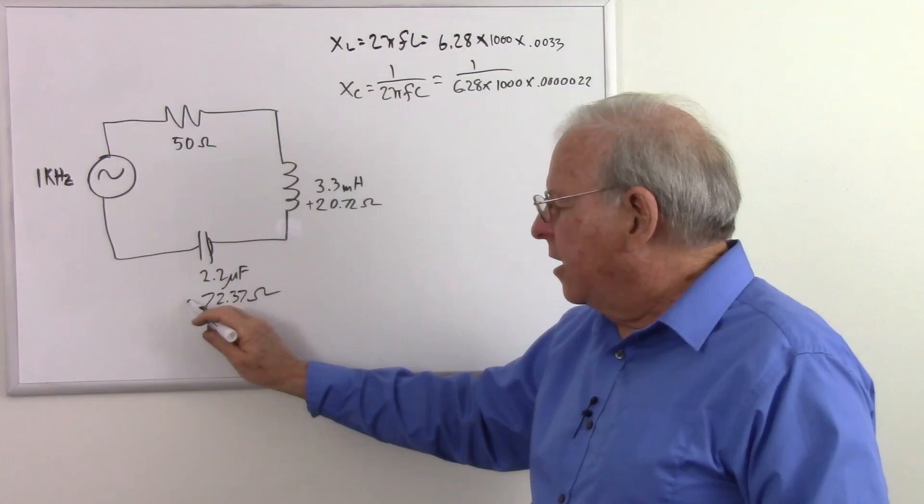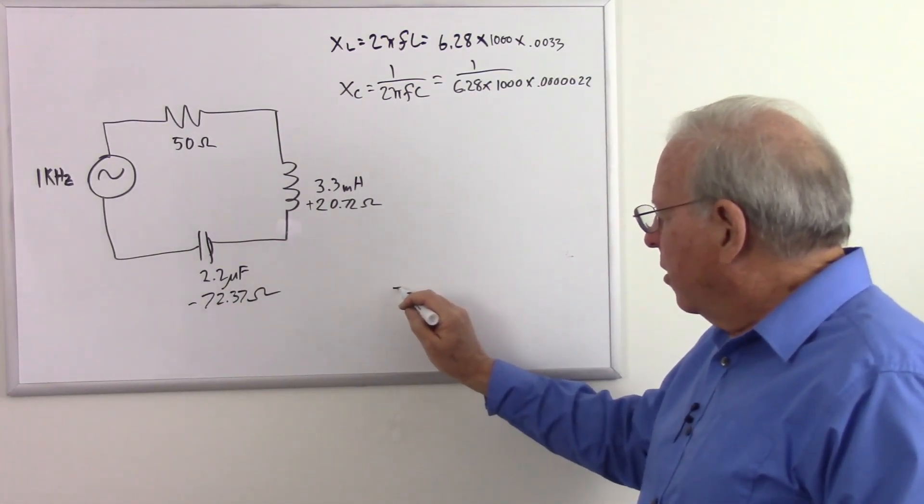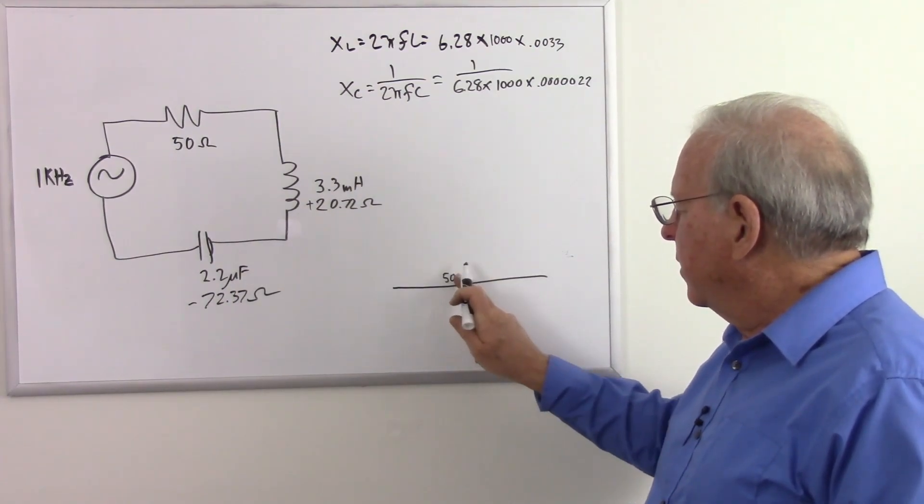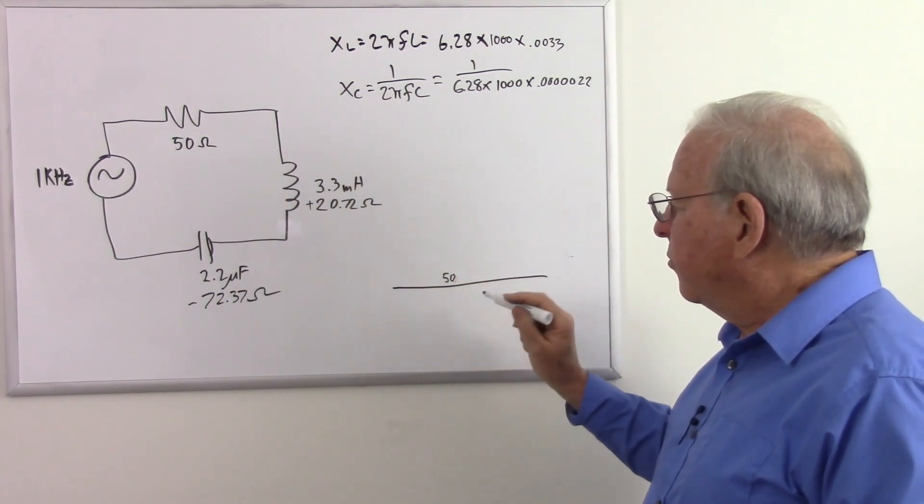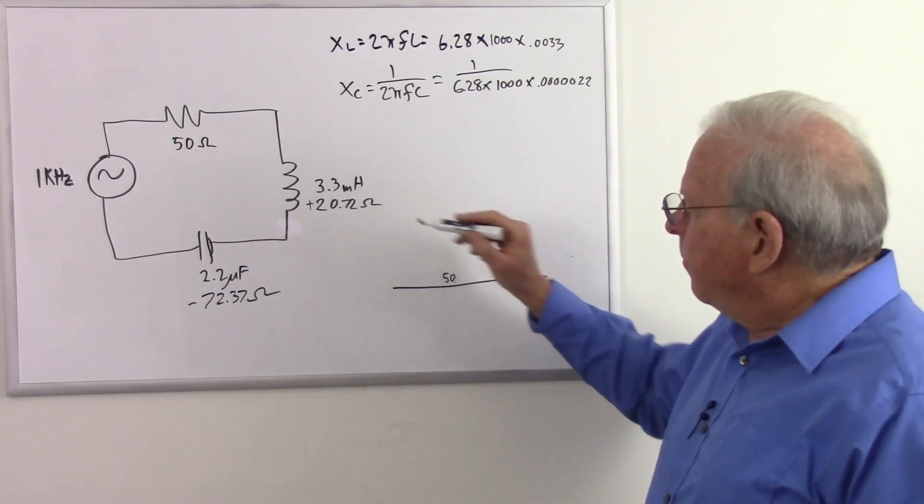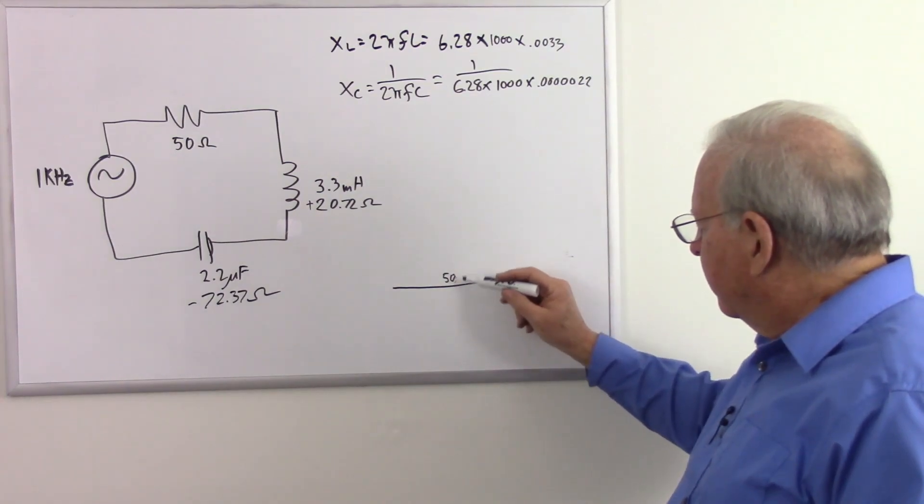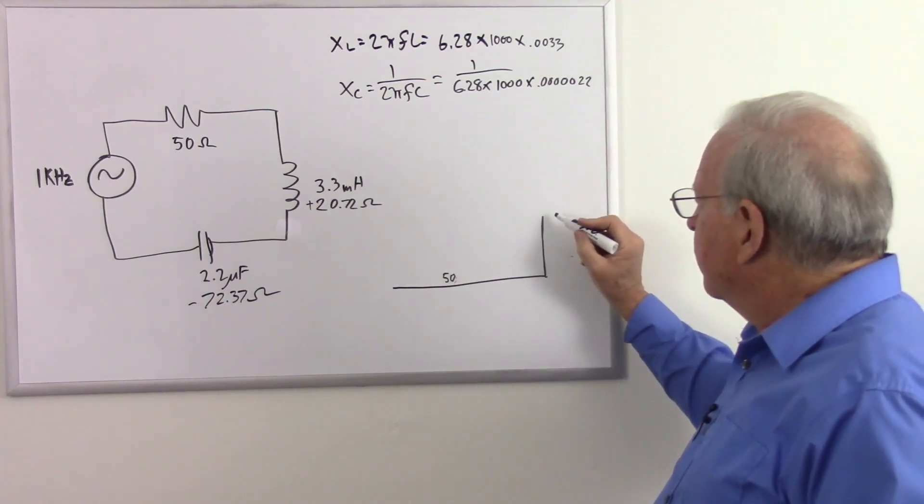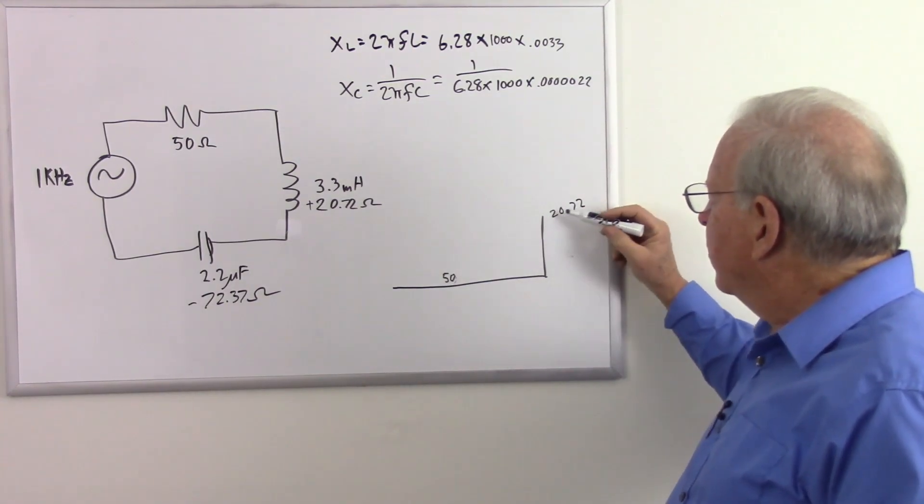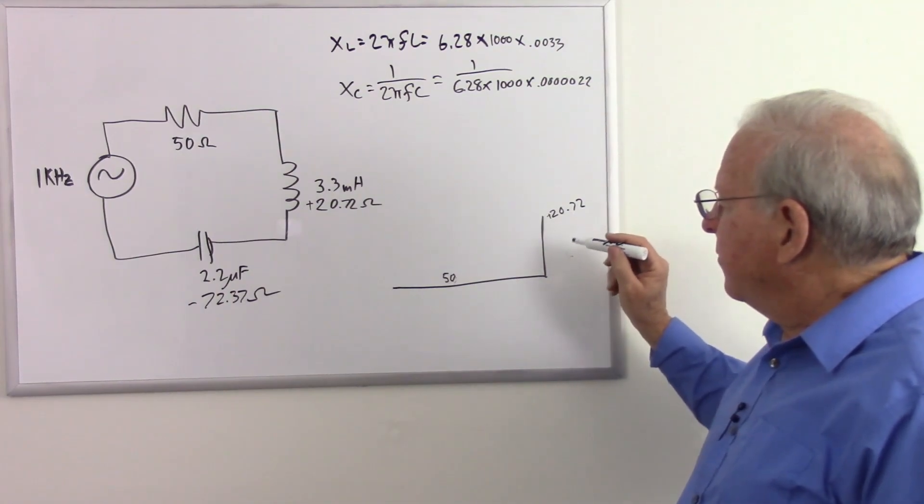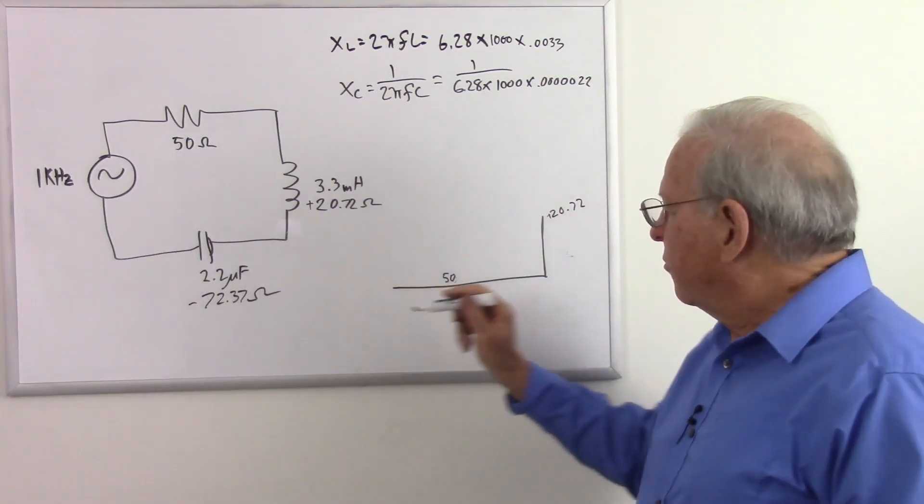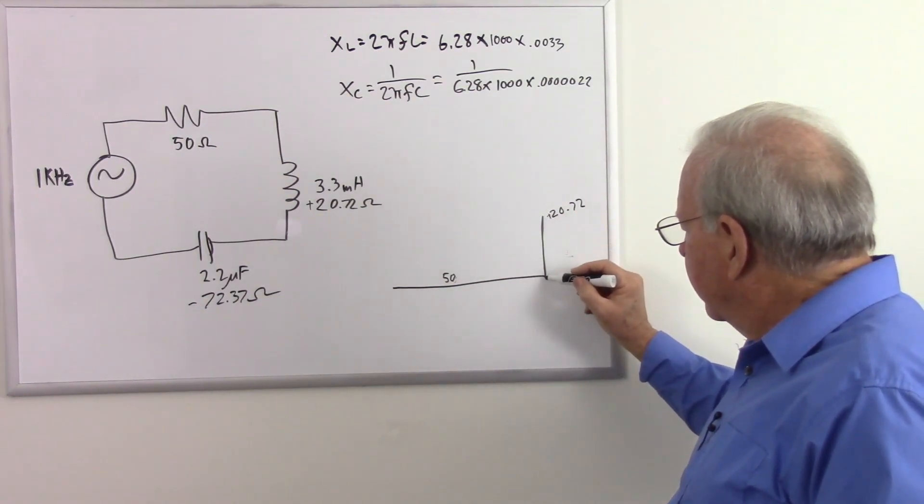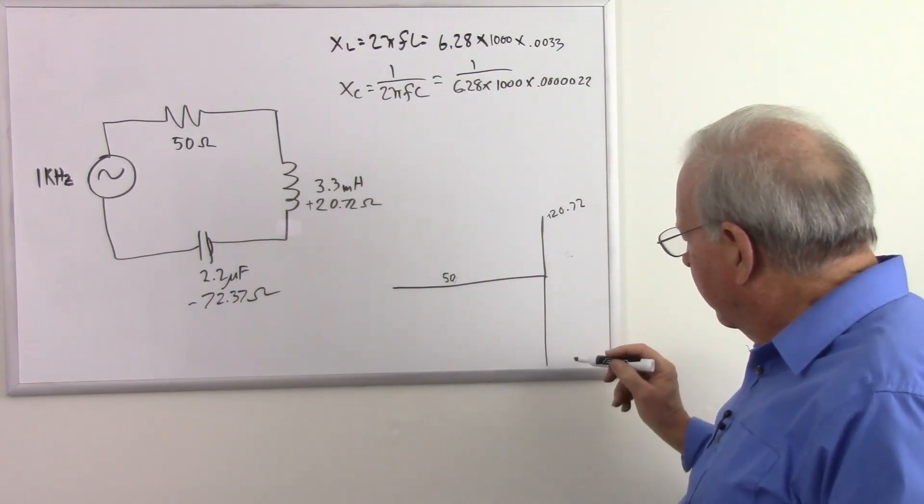I'll put a positive sign there and a negative sign there for convention, and let's draw our triangle. We're going to start out with 50 ohms of resistance, and we're going to add 20.72 ohms of inductive reactance. So there's 50, that's about 20. So that's going to be 20.72 ohms of inductive reactance. Now we need to subtract 72.37. That's going to be a lot, down to the bottom of our board there, but it doesn't need to be perfect as long as the numbers come out perfect.